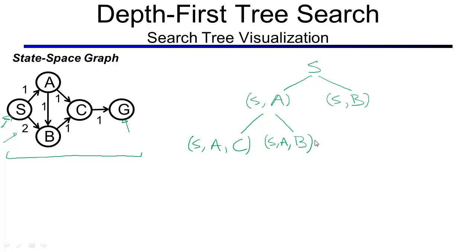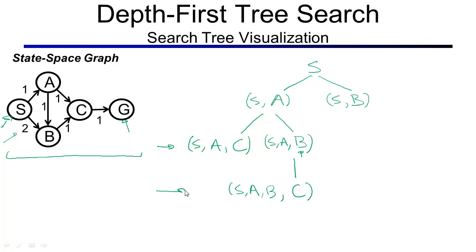Depth first search always looks at the things deepest in the tree first. There are two that are equally deep; amongst those it does alphabetical tie-breaking. B comes first alphabetically, so now it will expand B. B has just one successor C. Again, this is not really just C, but it is a plan to start in S, go to A, go to B, and then go to C. As the next node to expand we pick this one because it is the deepest in the search tree, and when expanding it we get just one successor G.